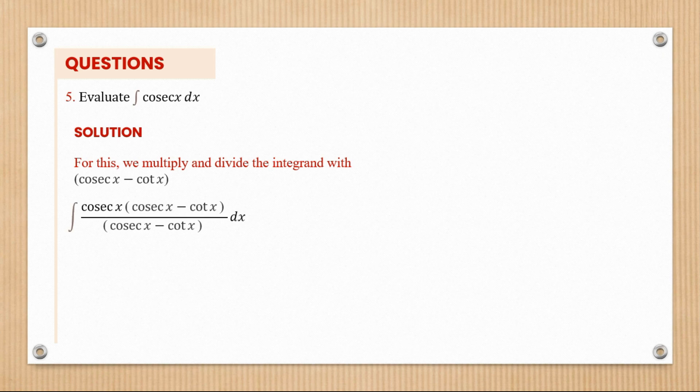We're going to multiply this one by this. So we multiplied and divided by this integrand right here. At the top, we have cosec x times cosec x minus cot x over cosec x minus cot x.